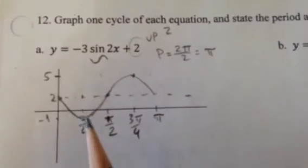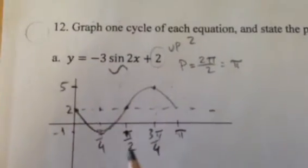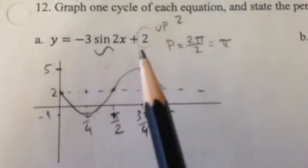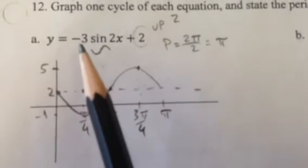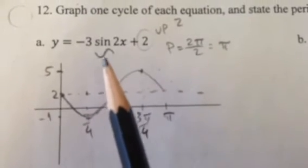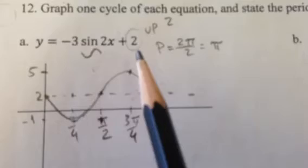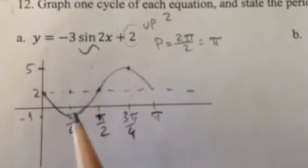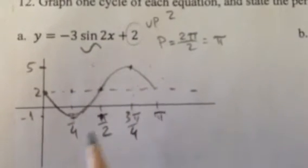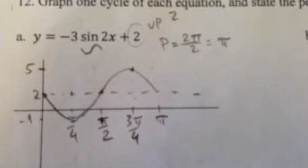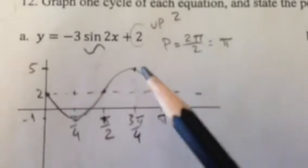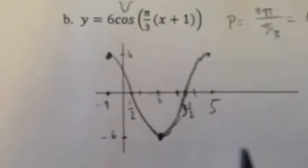Graphing one cycle here. This is what your graph should look like for number 12, the first part. It's got a vertical shift of 2. It's a negative sine. So it has this kind of a shape right here. The period is pi. And so here's your length of one cycle with your x-axis scaled appropriately. It goes up to a maximum of 5 and down to a minimum of negative 1.